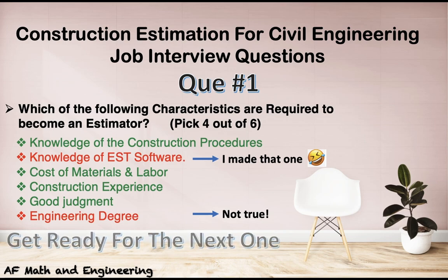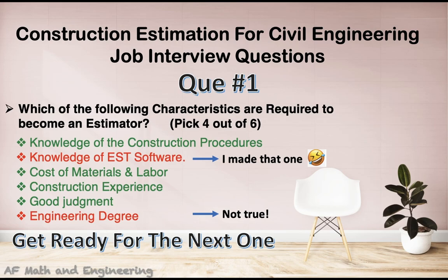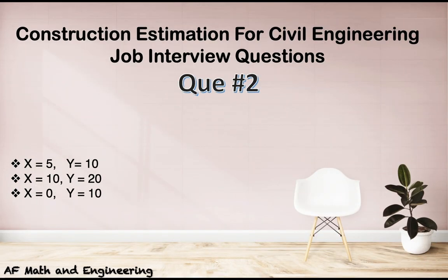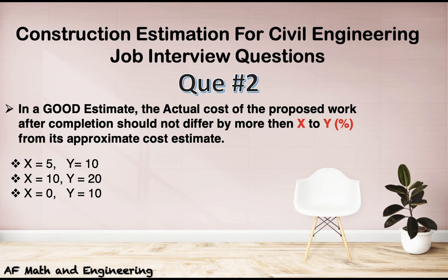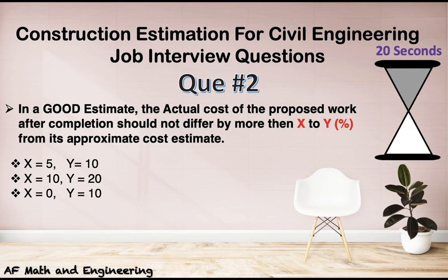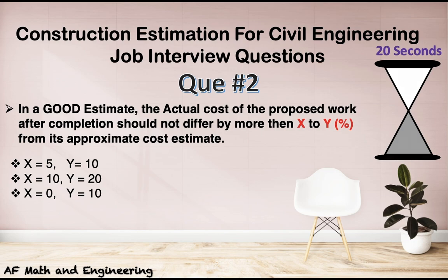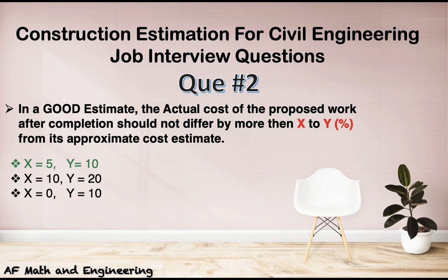Let's get ready for the next one. In a good estimate, the actual cost of the proposed work after completion should not differ by more than X to Y percent from its approximate cost estimate. What are those percents? The answer is 5 to 10.